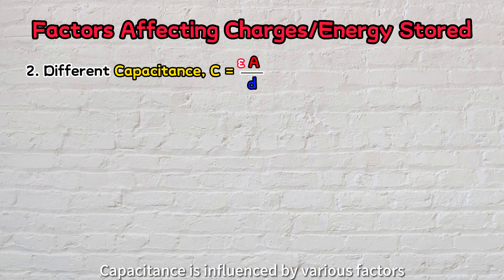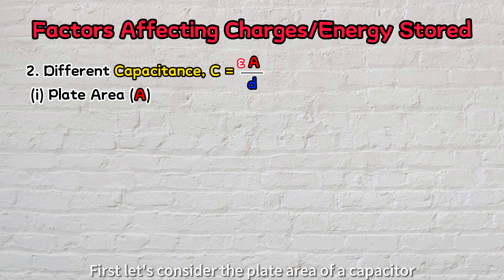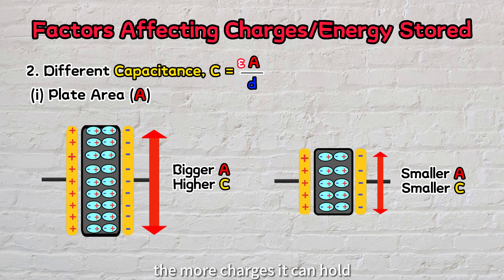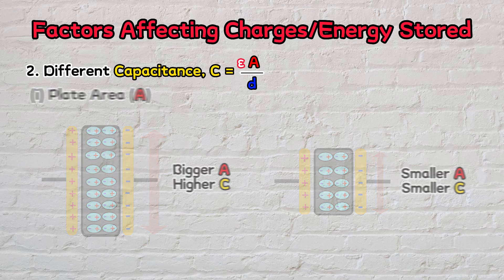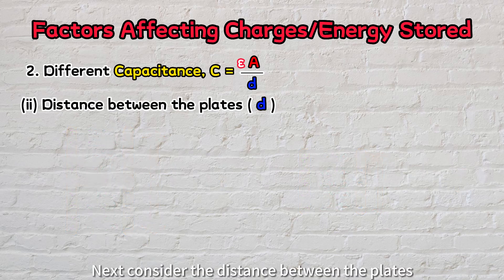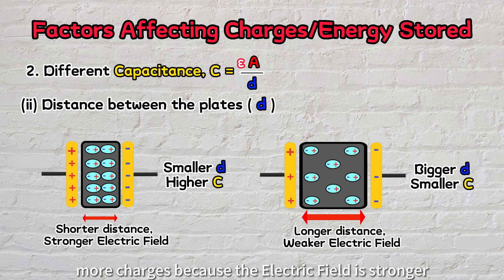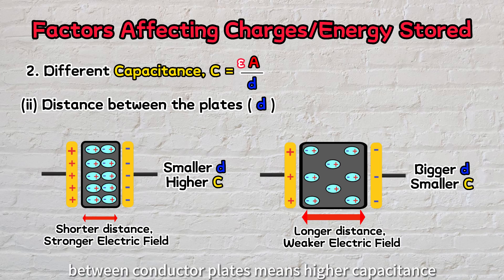Capacitance is influenced by various factors. First, let's consider the plate area of a capacitor. The bigger the plate area, the more charges it can hold — it is just like having a larger bucket that can hold more water. Next, consider the distance between the plates. According to Coulomb's law, when the plates are closer to each other, they can hold more charges because the electric field is stronger. So a smaller distance between conductor plates means higher capacitance.